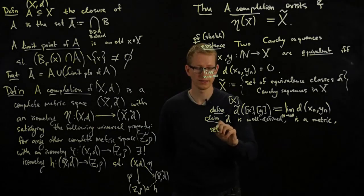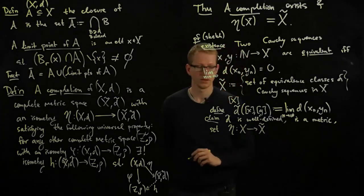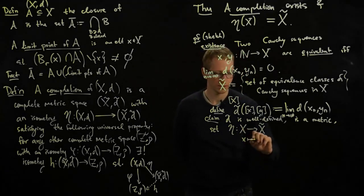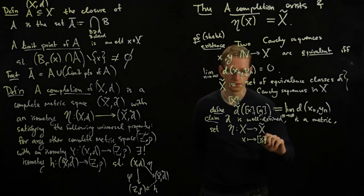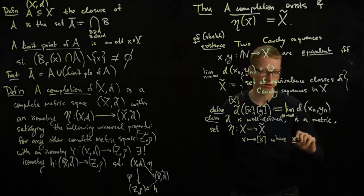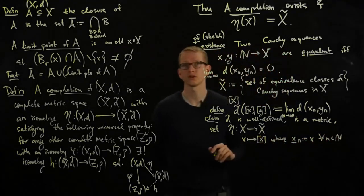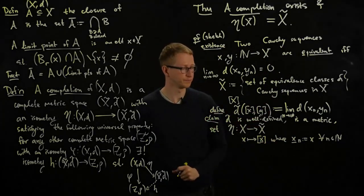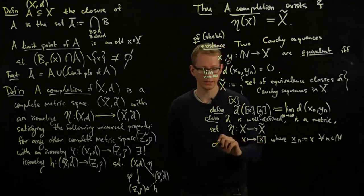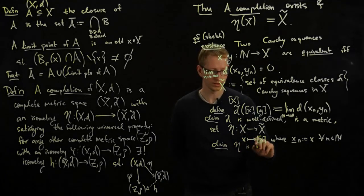So let's do that. Let's set the isometry eta from x to x tilde to be, take x, and send it to the Cauchy sequence. I'll denote this by x bar, where x bar n equals x for all n. So it's just the constant Cauchy sequence that takes a point in x and just repeats it over and over and over again. And the claim is that eta is an isometry.